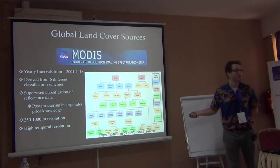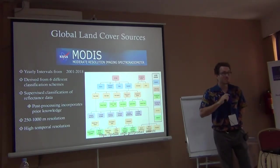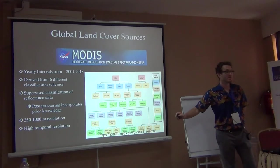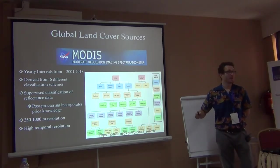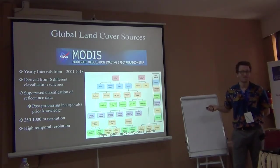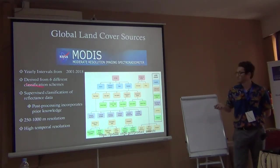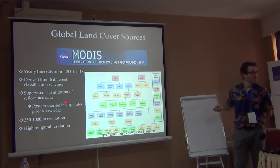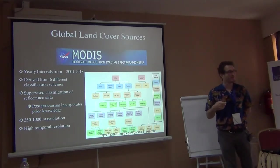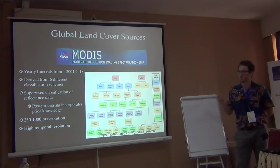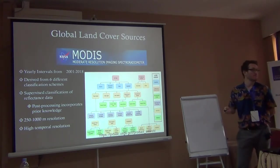MODIS is another really popular one — great because it comes straight out already classified. You don't have to do anything; the data they give you is classified with a certain number of classes: water, vegetated, urban, cropland, forestland, grassland. Already classified, straight from the website. A really popular one that a lot of people use.